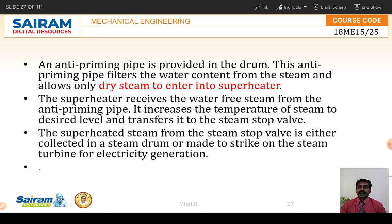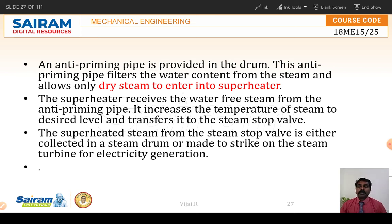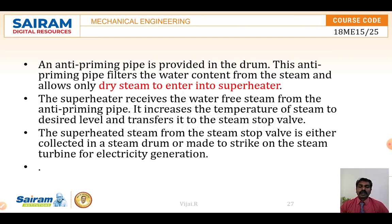The superheater receives water-free steam from the anti-priming pipe and increases the temperature of steam to the desired level before transferring it to the steam stop valve. Wet steam going to the turbine reduces efficiency because water particles corrode the turbine blades. Therefore, wet steam is further heated to become dry steam, then sent to the superheater where it reaches a fully gaseous superheated stage before being sent to the turbine for electricity generation.